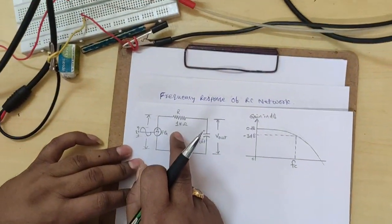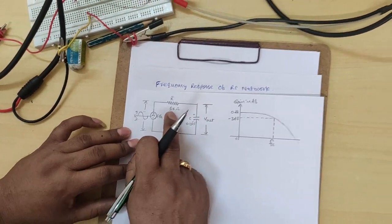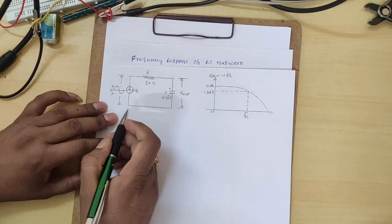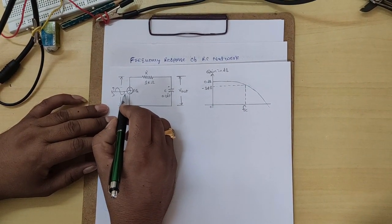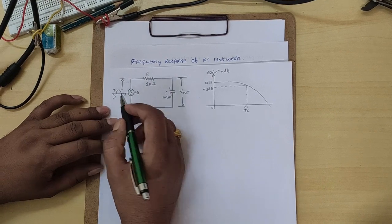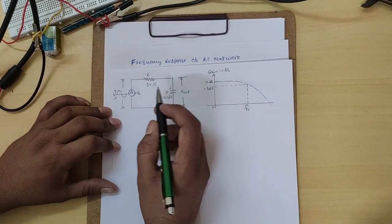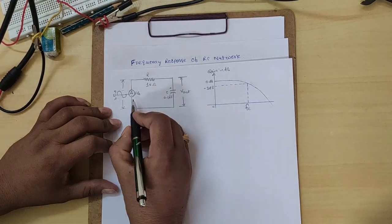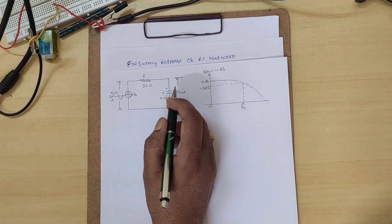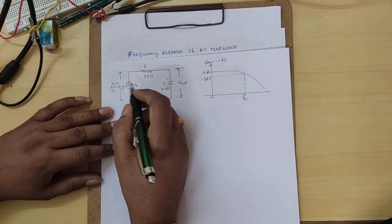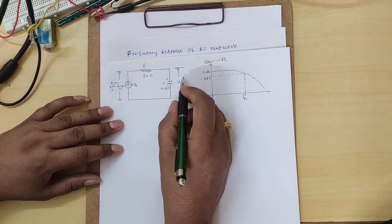Hi students, today's experiment is the frequency response of an RC network. This is the circuit diagram for the RC circuit. We are using two components: one resistor and one capacitor. For input, we are giving a sine wave signal from a function generator. We have already explained the function generator and CRO in the last video, so what is the functionality of the function generator and CRO has already been discussed. Now, the function generator is used for input and the CRO is used for output.